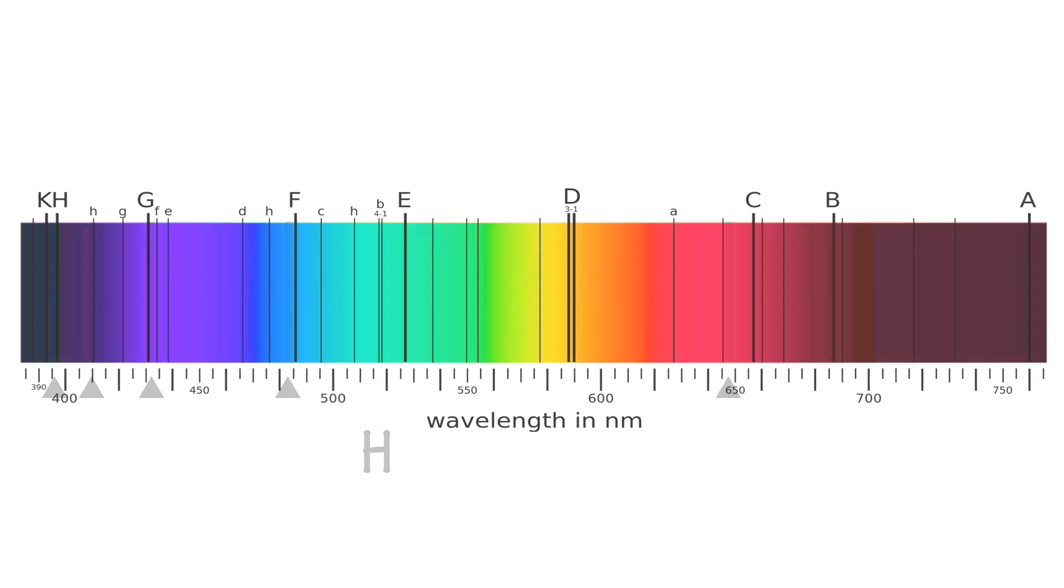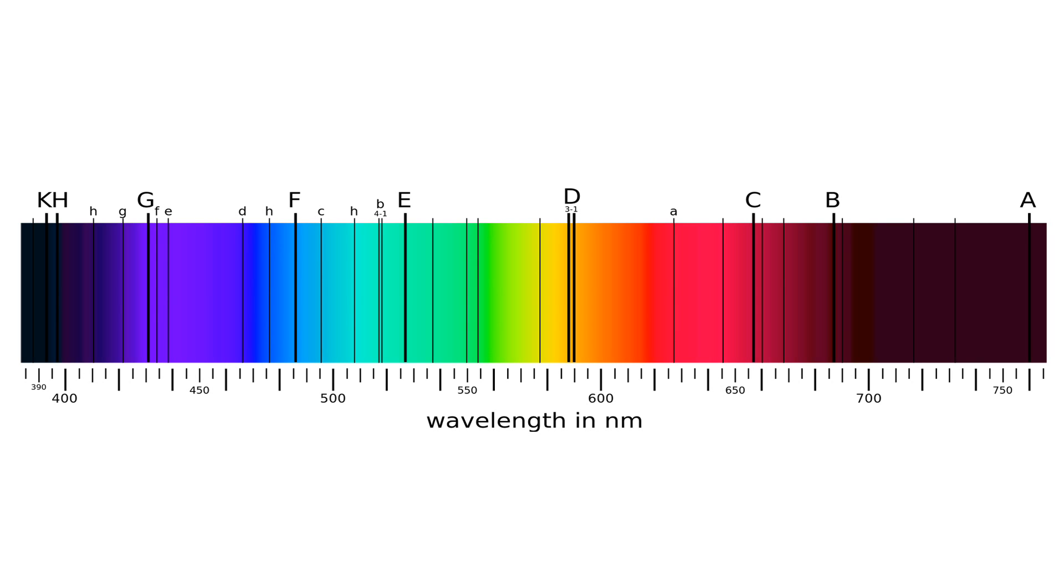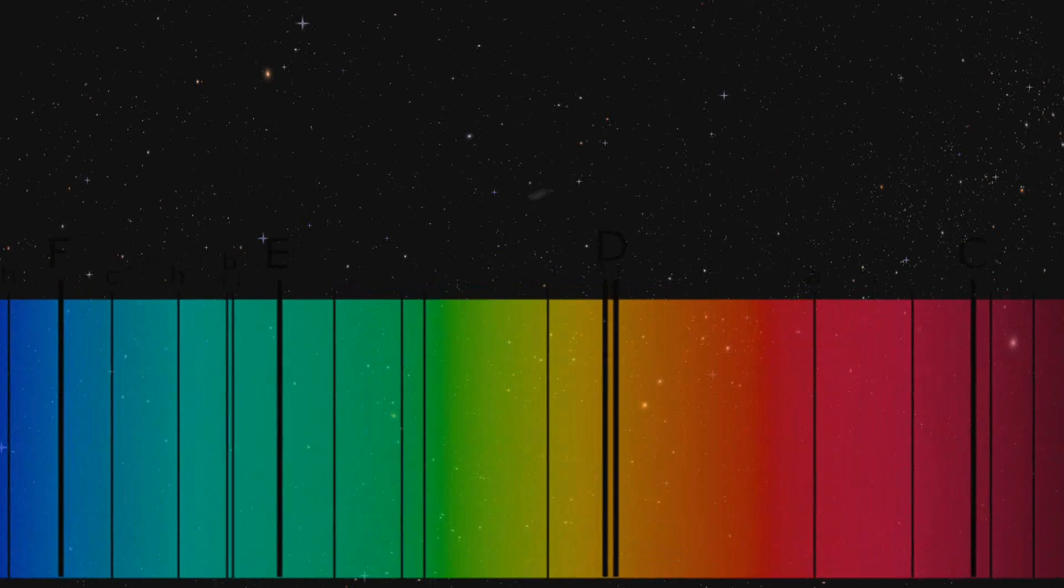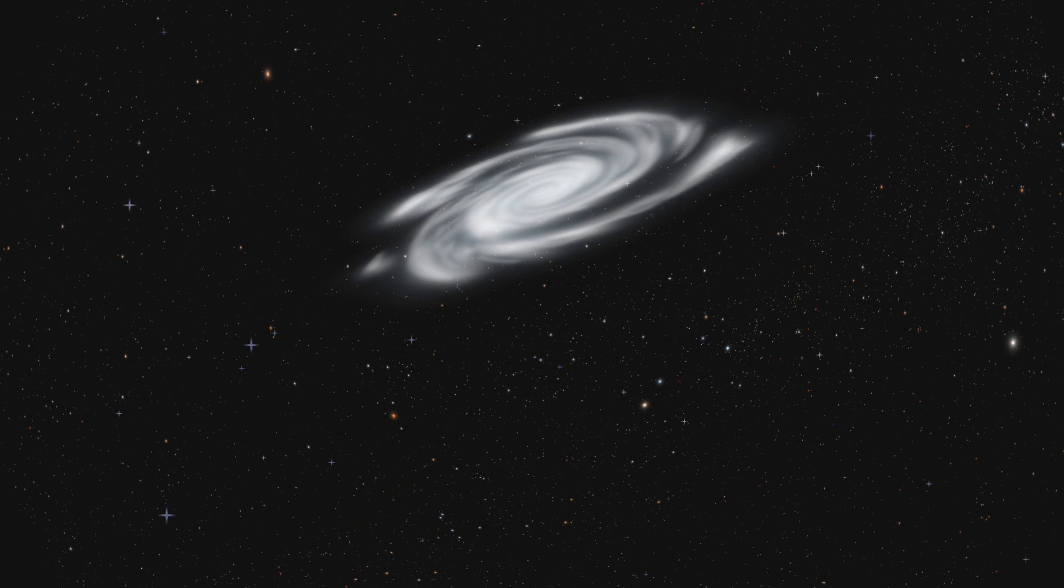Here are the spectral lines for the Sun. By analysing these lines, scientists can tell what elements make up the Sun. And spectral lines can also be used to investigate what elements make up stars and distant galaxies.